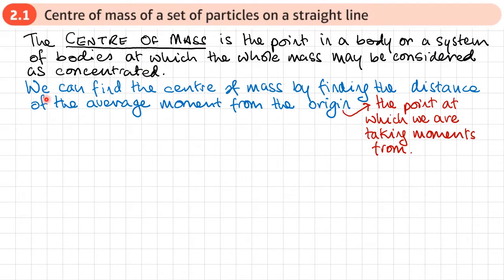We can find the centre of mass by finding the distance of the average moment. So we're going to be using moments to help us find the centre of mass, to find the distance of the average moment from the origin. The origin is just the point at which we are taking moments from.